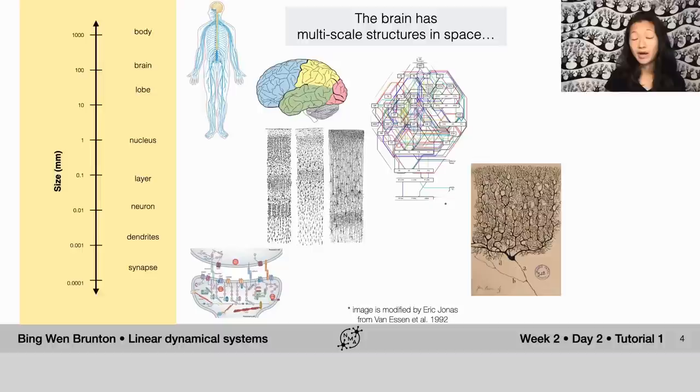From the size of a synapse all the way up to dendrites, neurons, layers of different neurons working together, the connections among different brain areas, all the way up to the order of a meter, which is the size of our bodies and so our nervous systems as they control our extremities.